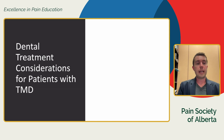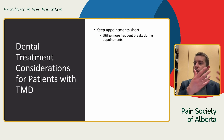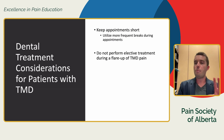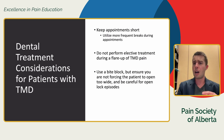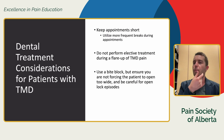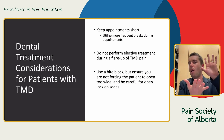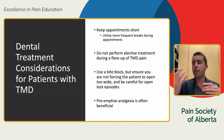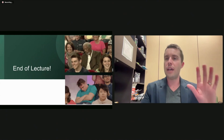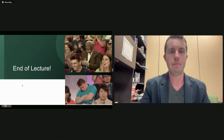Some final dental treatment considerations: if you have jaw pain, keep appointments short. Tell your dentist or hygienist you're having jaw issues and request frequent breaks. Do not undergo elective treatment during a flare-up — routine cleanings or fillings can wait. Use a bite block if needed, but ensure the dentist doesn't open your jaw too far — only as wide as is comfortable for you. Finally, consider preemptive analgesia: if you have a dental appointment, take your usual anti-inflammatory or acetaminophen about an hour beforehand to make things easier afterward.